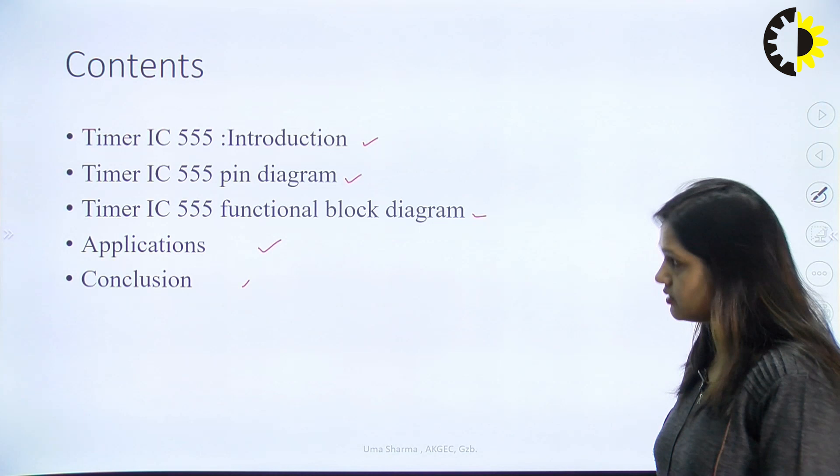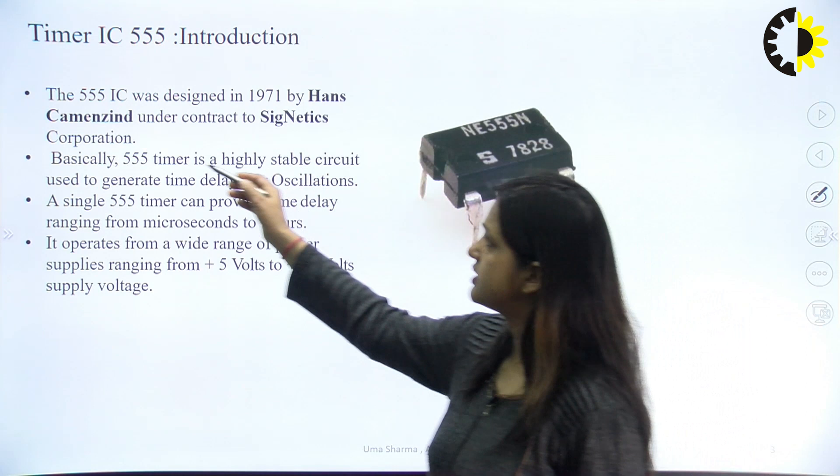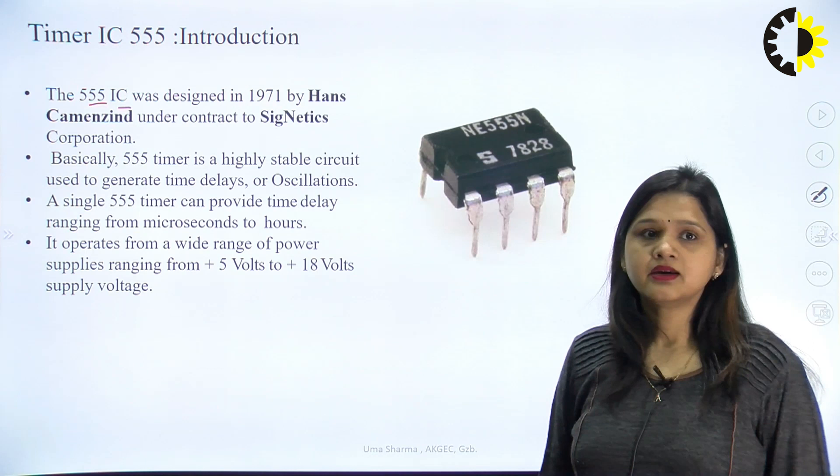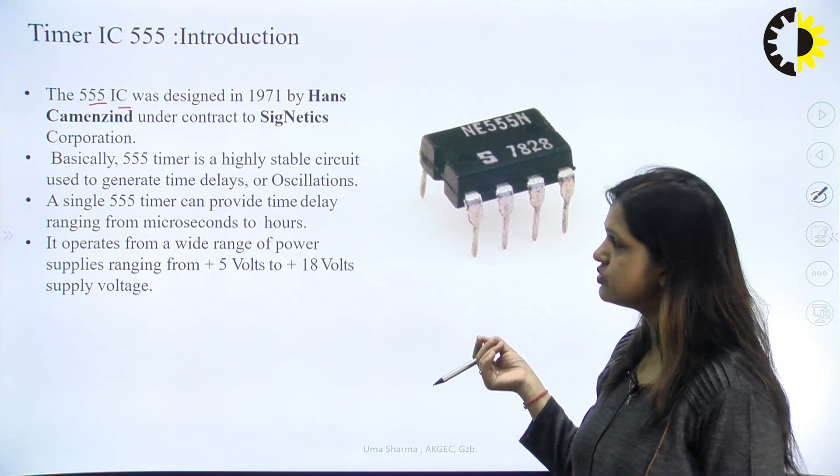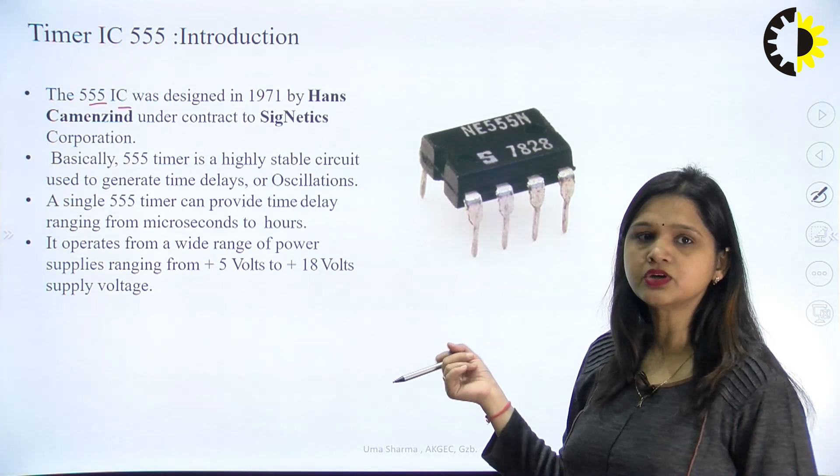This IC comprises of 555. There are three 5s in the name of this IC, and it has its own significance — why the name is 555 timer. We will see this through the functional diagram of this IC.